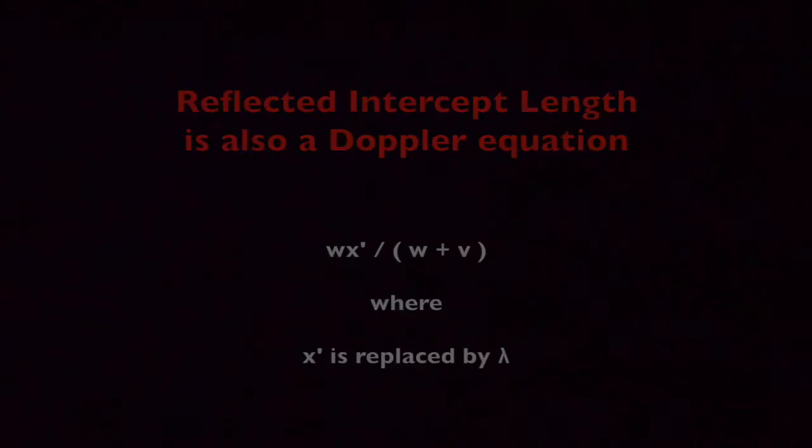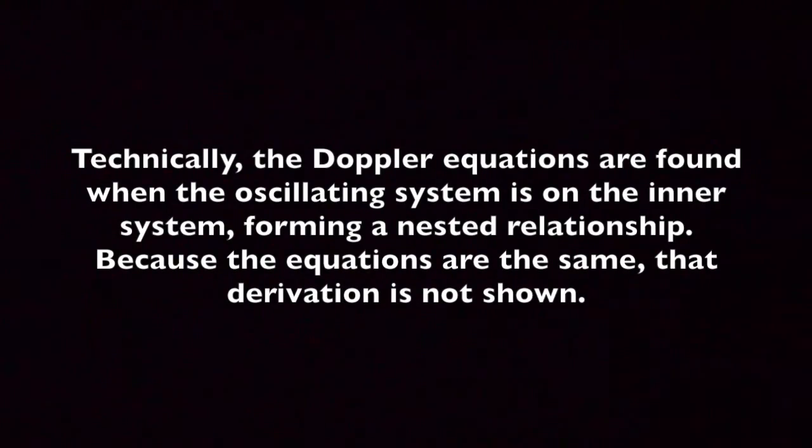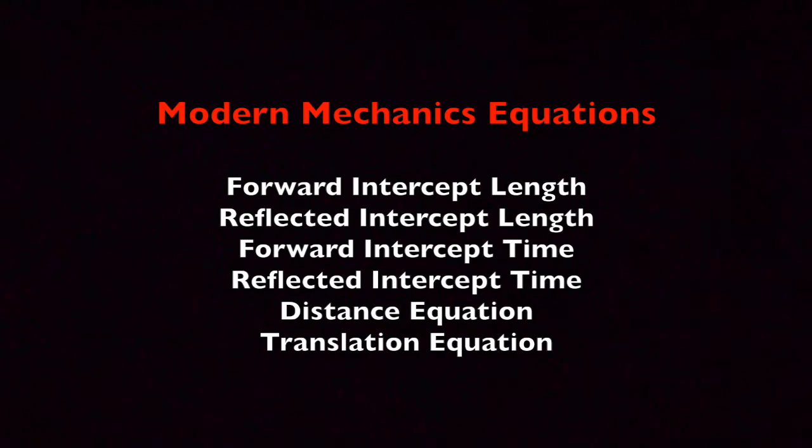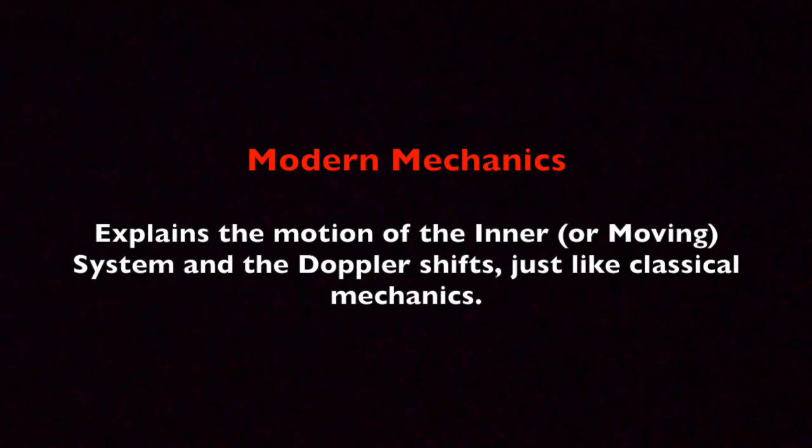For now, I'm ignoring an important subtlety, which I'll need to address later when I take a closer look at relativity, but it's important that I show that modern mechanics is able to explain what classical mechanics explains today. So in this episode, I've introduced you to some of modern mechanics' key equations, and I've shown how modern mechanics and classical mechanics make the same predictions for the moving inner system and for the Doppler shifts.